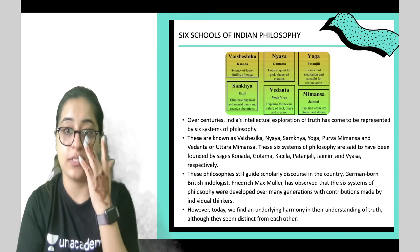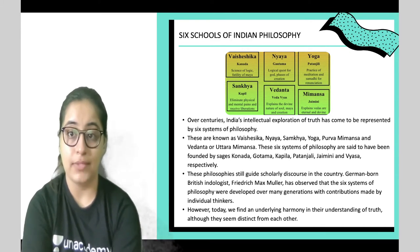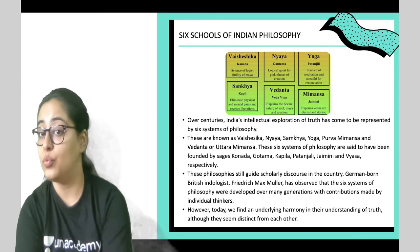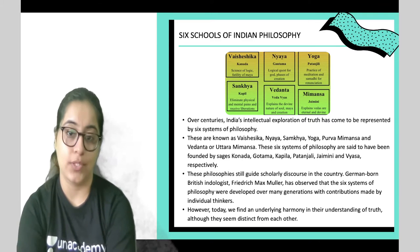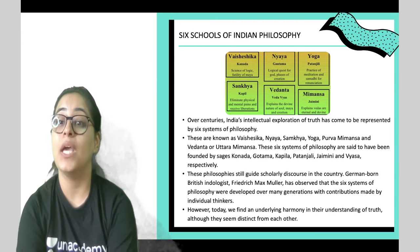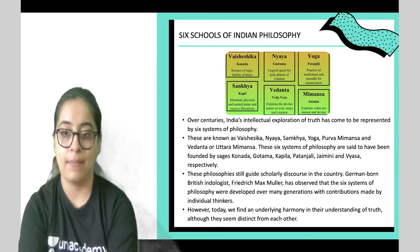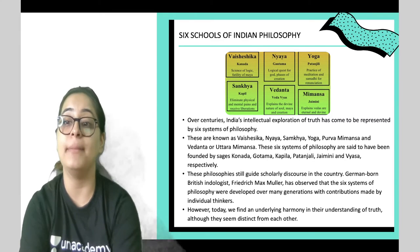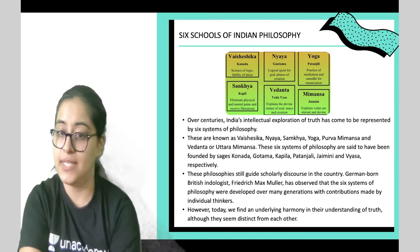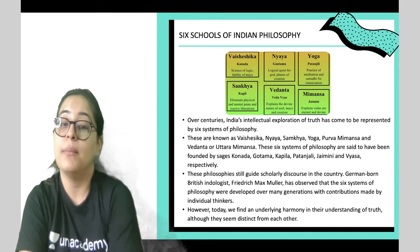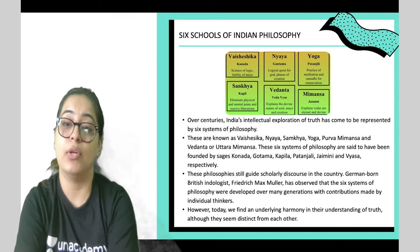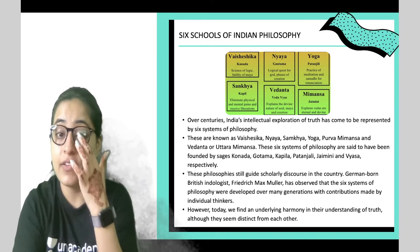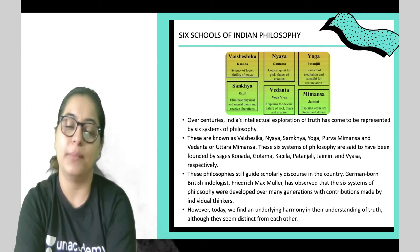Now let's go to the six schools of Indian philosophy. Over centuries, India's intellectual exploration of truth has come to be represented by six systems of philosophy: Vaisheshika, Nyaya, Samkhya, Yoga, Purva Mimansa, and Vedanta. These six systems are said to have been founded by sages Kanada, Gautama, Kapila, Patanjali, Jaimini, and Vyasa respectively. These philosophies were developed over many generations with contributions made by individual thinkers. Today we find an underlying harmony in the understanding of truth, although they seem distinct.